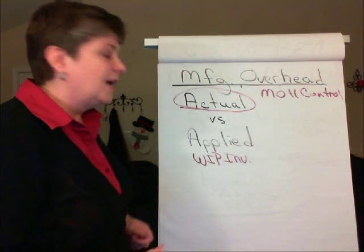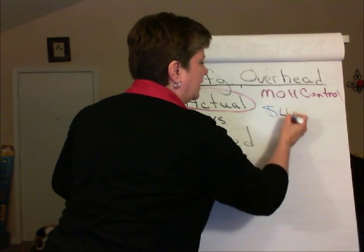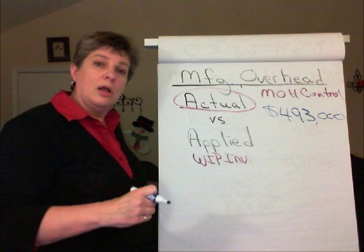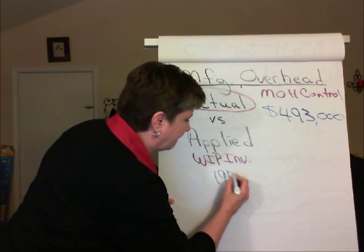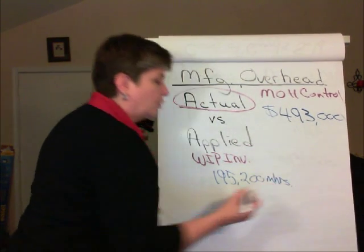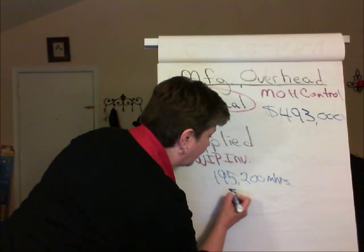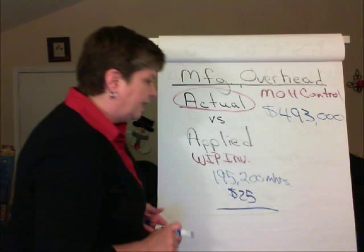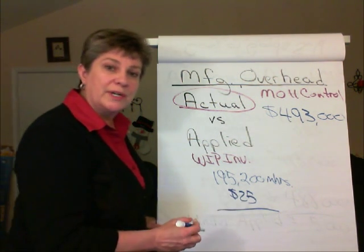For illustration, let's say actual overhead charged to manufacturing overhead control totaled $493,000. For all jobs worked on during the period, the business incurred 195,200 machine hours. Our predetermined overhead application rate was $25 per hour, so 195,200 machine hours times $25 gives us the total applied overhead of $488,000 charged to work in process inventory.